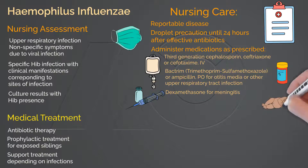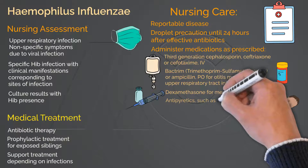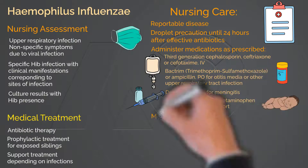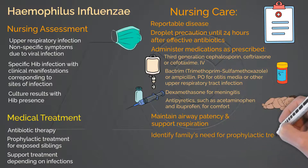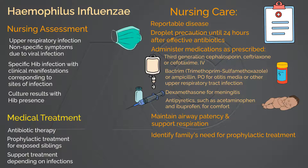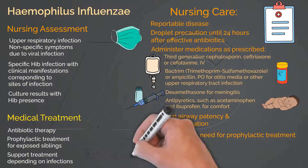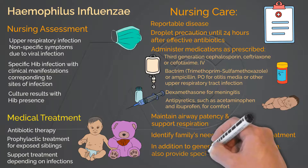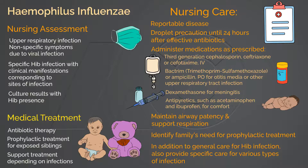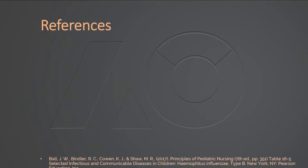Antipyretics such as acetaminophen and ibuprofen are administered to provide comfort. Maintain airway patency and support respiration. Identify family members' needs for prophylactic medications and/or vaccination. When providing patient education on usage of rifampin, warn the family that the urine color will turn orange. Provide support to the child and family members. In addition to the stated general care for Haemophilus Influenzae Type B infection, also provide care according to the specific type of infection. Thank you for taking this lecture.